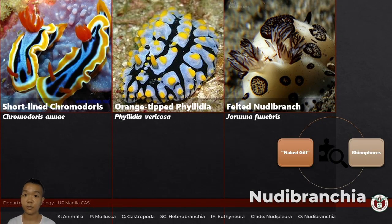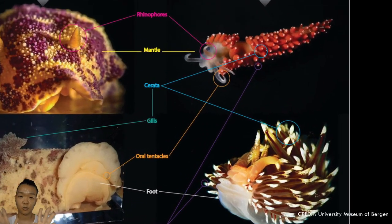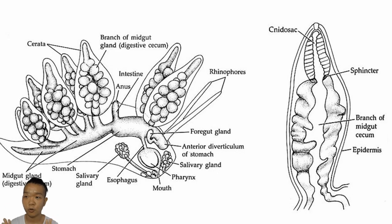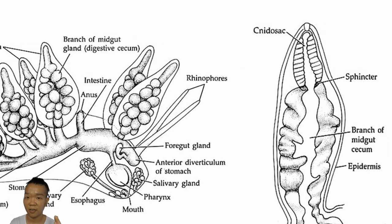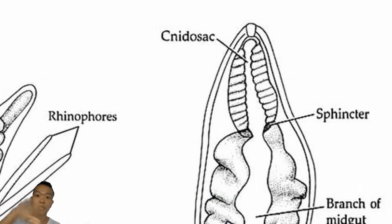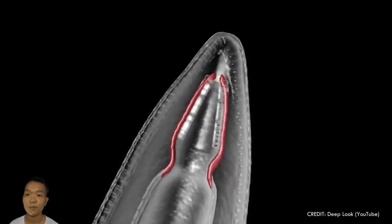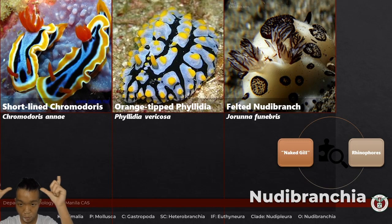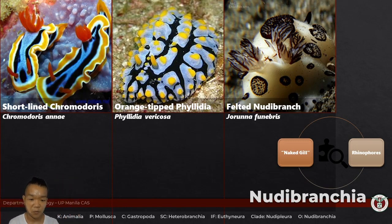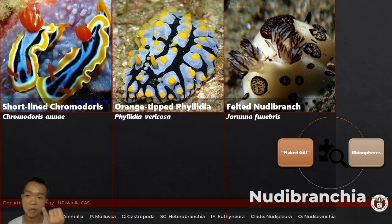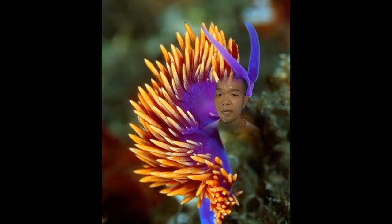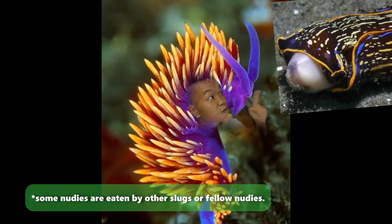Nudibranchia — the gills are either positioned posteriorly or located in structures called cerata. Some of them also store nematocysts from the cnidarians they eat and put them in the cerata — so if a predator tries to eat them, the nematocysts fire and they have the power of cnidarians. They have protrusions called rhinophores with a chemosensory function. How do they protect themselves? They're soft, squishy, and slow — that's why they have very bright colors. Many of them are toxic. They use their colors to warn predators: don't eat me, or you're going to regret it.